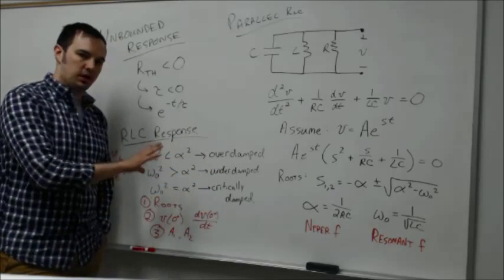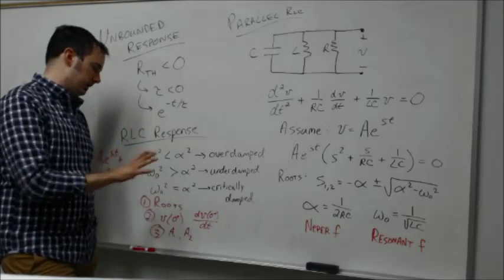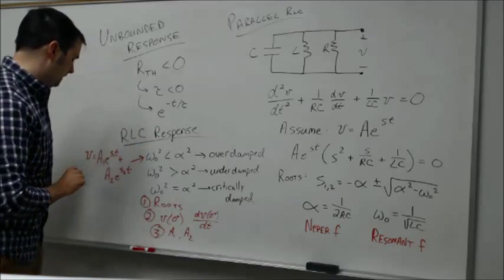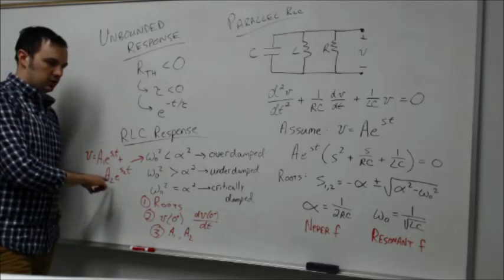Each of these different conditions is going to have its own unique solution. I haven't written all those solutions up here on the board, but just be aware of that. In the case of the overdamped solution, we had something of the form A1 times exponential s1t plus A2 exponential s2t.